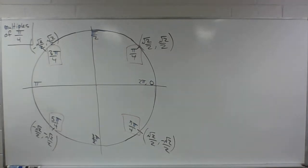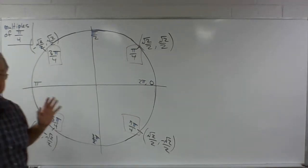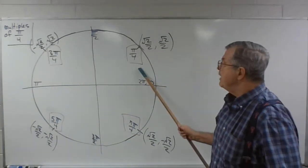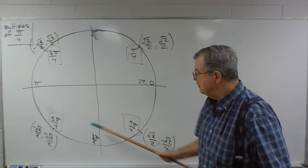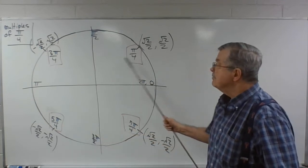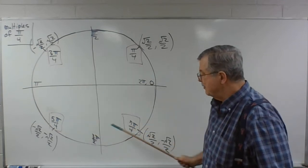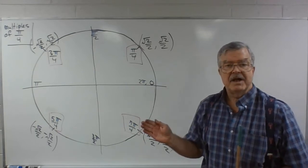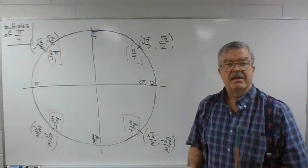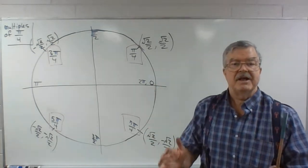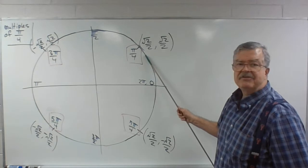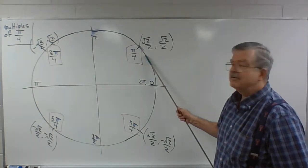The really great thing about the sines and cosines of the multiples of pi over 4 that don't reduce — the odd multiples of pi over 4 — is that not only do they all have the same cosine and the same sine, but the sines and cosines are the same as each other. The sines and cosines of all of these angles are square root of 2 over 2.